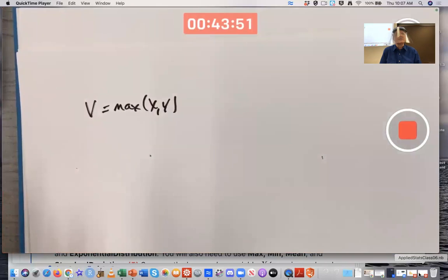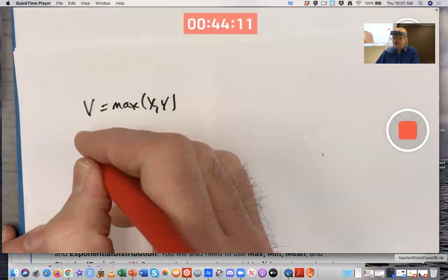V is the maximum of X and Y. That's the transformation. You got to use the CDF method because the transformation is actually a transformation of two variables instead of one. And it's a maximum - how do you differentiate a maximum?